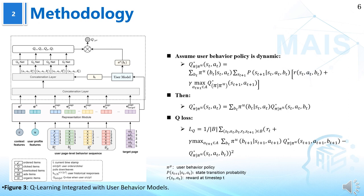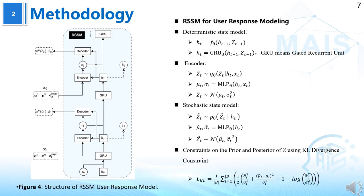Our methodology initiates with deriving the queue function update formula under opponent modeling. This critical step enables us to more effectively consider the impact of user responses in the recommender system. The RSSM models user responses, predicting their responses based on historical and current interaction data.